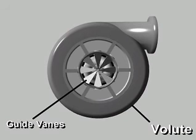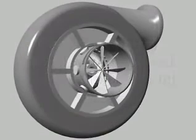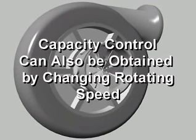As the vanes are closed, they reduce refrigerant flow through the compressor, reducing the capacity of the refrigeration cycle. In addition, capacity control in a centrifugal compressor can also be obtained by changing the rotating speed.